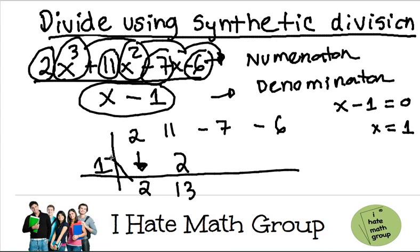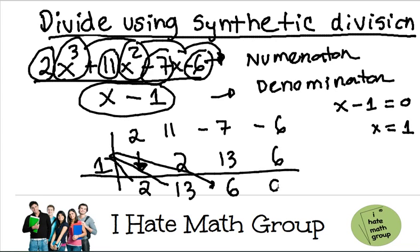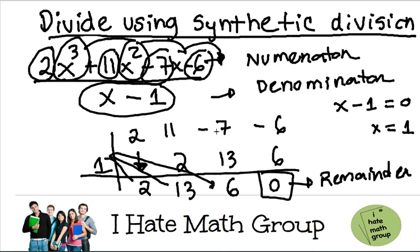Then you do 1 times 13, which is 13. Negative 7 plus 13 equals 6. Finally, 1 times 6 is 6. Negative 6 plus 6 is 0. The last number is the remainder — in this case, my remainder is 0. That means x minus 1, or x equals 1, is actually a factor of this division.